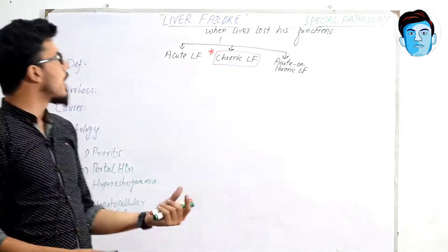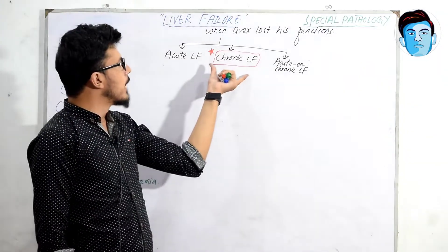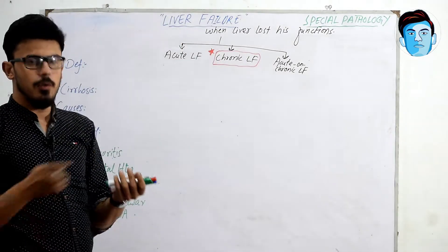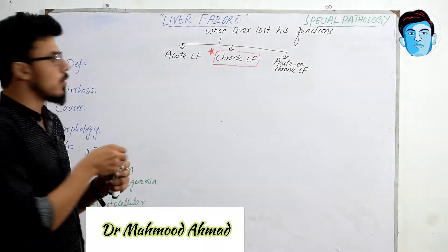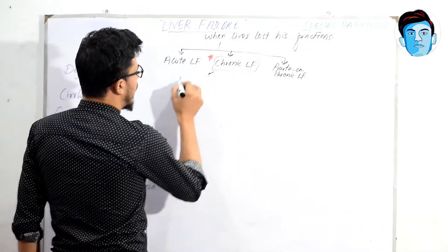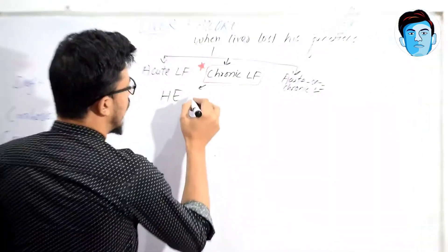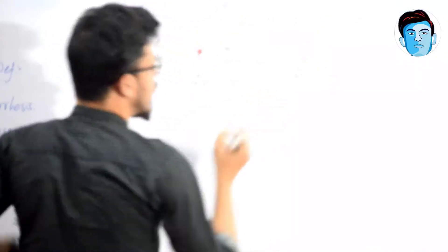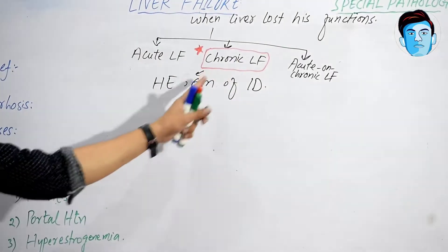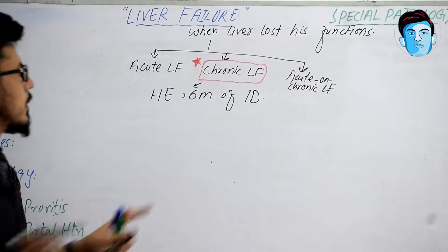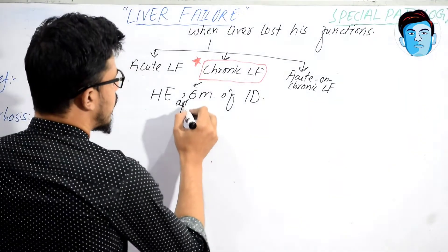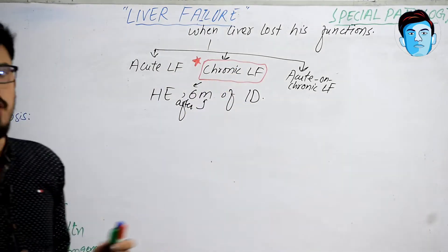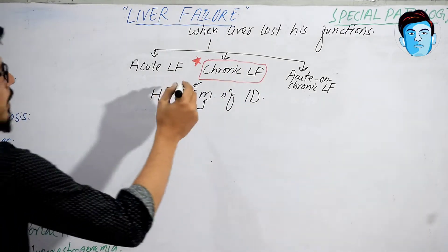Now let's talk about another lecture: chronic liver failure. What is the definition of chronic liver failure? Chronic liver failure means that whenever hepatic encephalopathy occurs after six months of initial diagnosis — that is chronic liver failure.